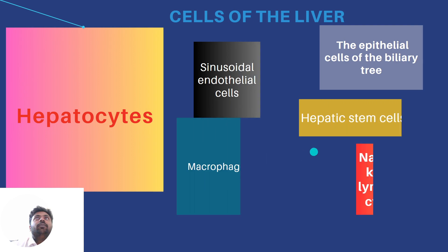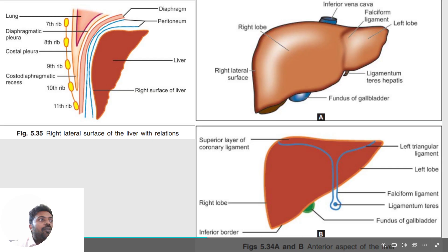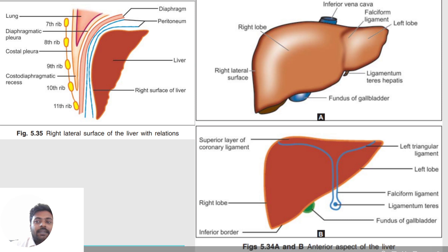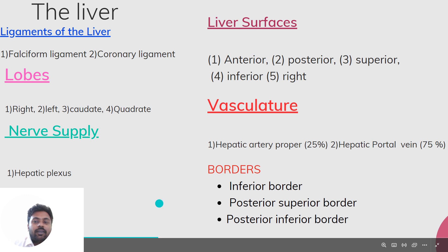Coming to the ligaments of the liver: the liver has many ligaments. The falciform ligament and the coronary ligaments are the primary ligaments that support the liver.